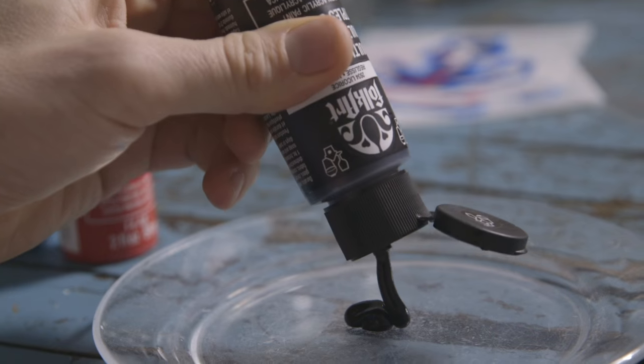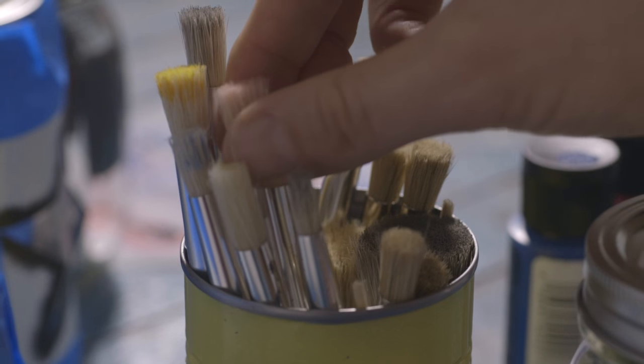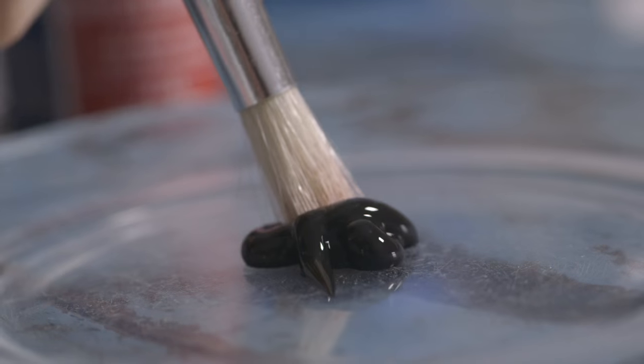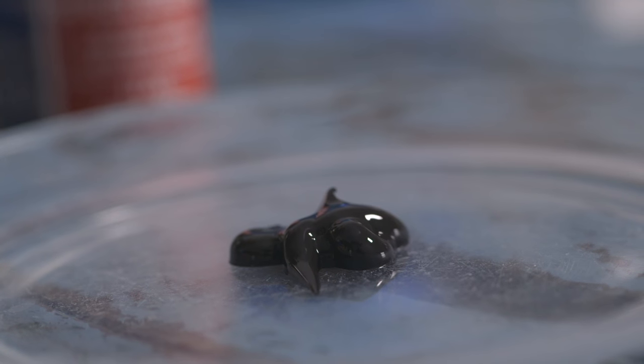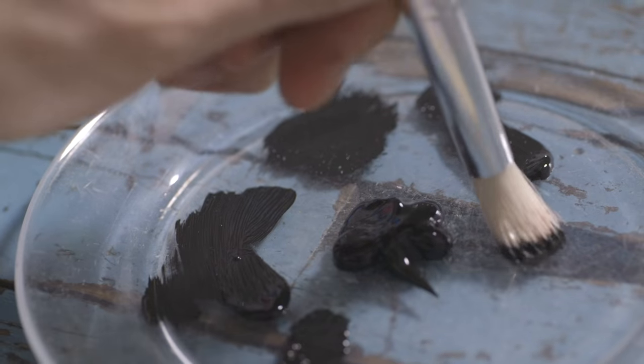I'm using this FolkArt multi-surface paint because it's great for glass. You dip into your paint to start, and since stenciling is a dry brush technique, you really want almost no paint on your brush.